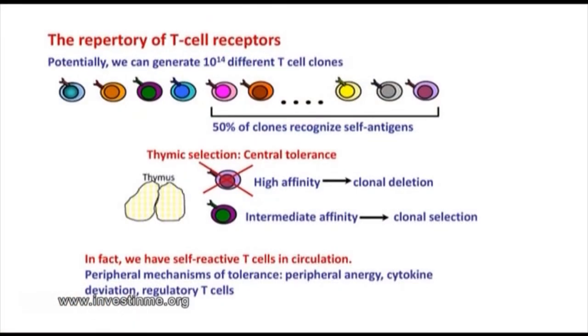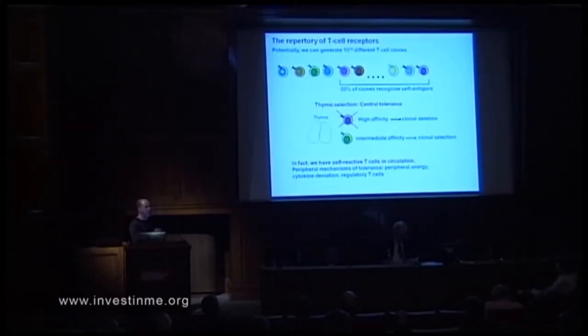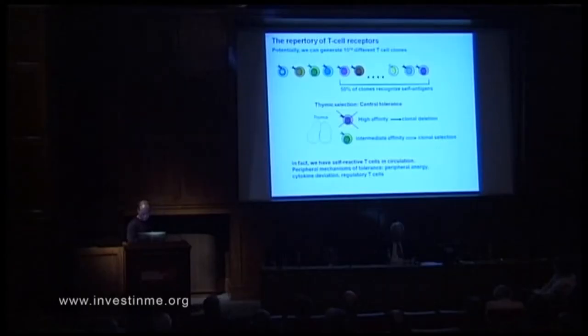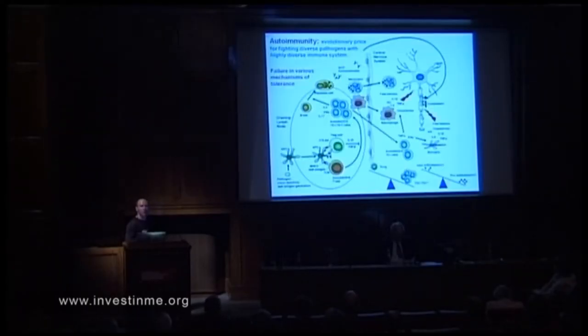So we need mechanisms of peripheral tolerance in our body, because we have self-reactive T-cells circulating. Here are some of the mechanisms our immune system uses to control self-reactive T-cells. Probably one of the most important is the induction of T-regulatory cells, which everyone was talking about this morning.